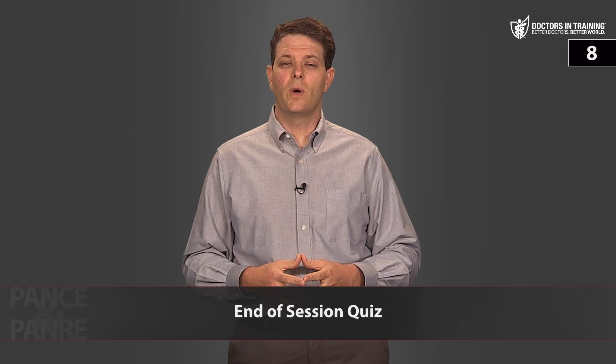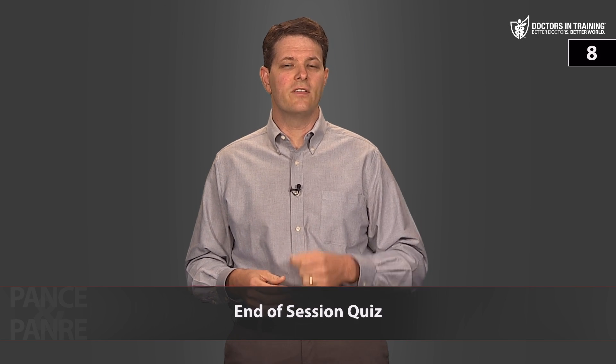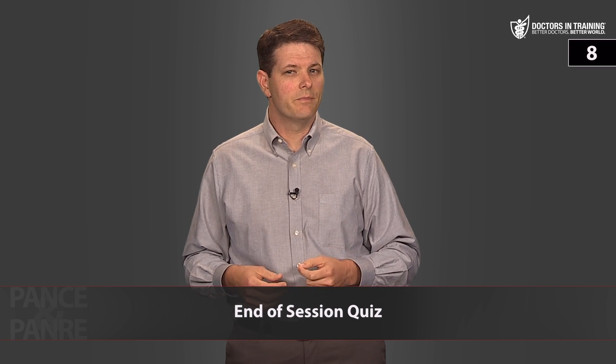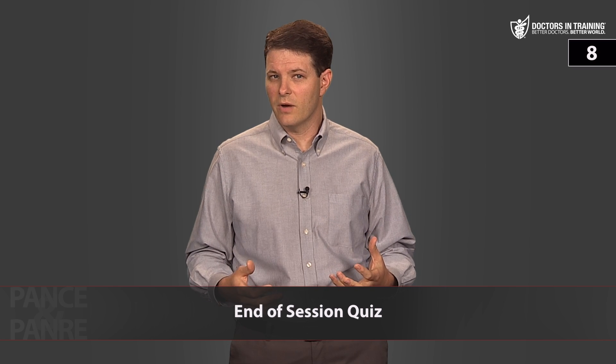Now it's time for the end of session quiz. A four-year-old girl presents with two days of itchy, watery eyes that began in the left eye and spread to the right. The eyes were matted shut this morning. Exam shows diffuse bilateral conjunctival injection. This is most likely viral conjunctivitis — adenovirus — since it started in one eye and spread, and the discharge is watery rather than purulent. Treatment is supportive care like antihistamine eye drops; no antibiotic therapy is indicated.